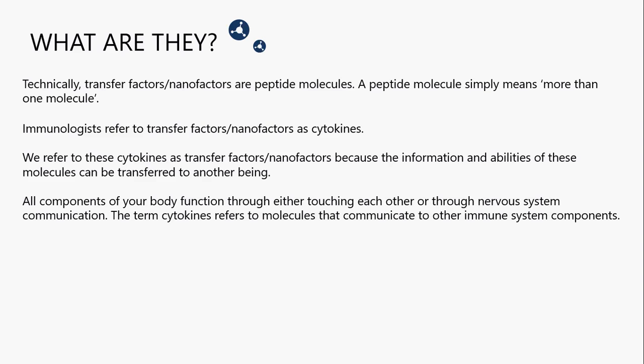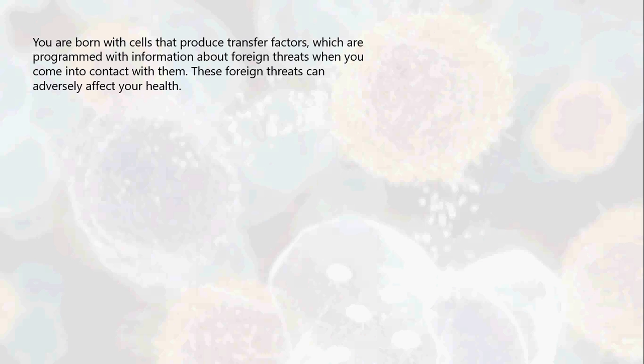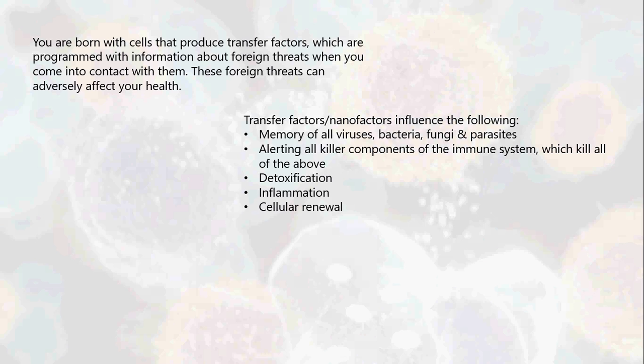This is how you can see, in a natural situation, transfer factors — the immune information, the abilities of the immune system — being transferred from the host to the recipient. All components of your body function through either touching each other or through nervous system communication. The term cytokines refers to molecules that communicate with other immune system components. You're born with these cells that produce transfer factors, which are programmed with information about foreign threats when you come into contact with them.